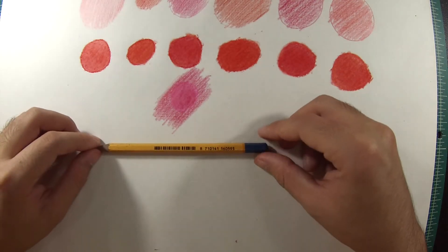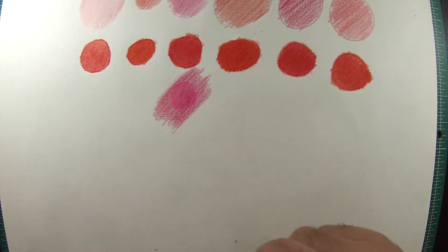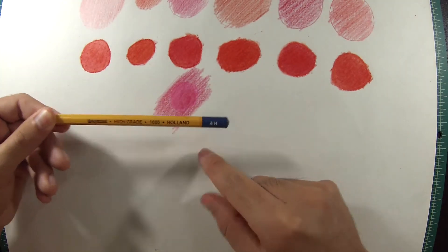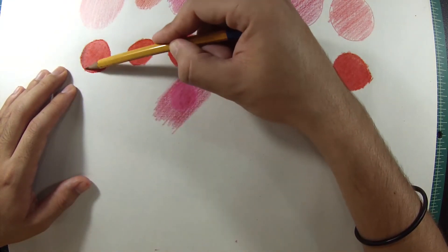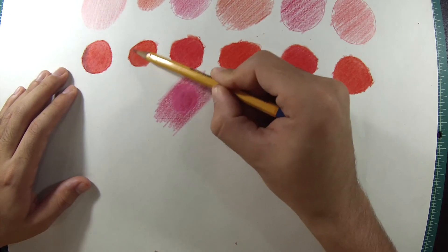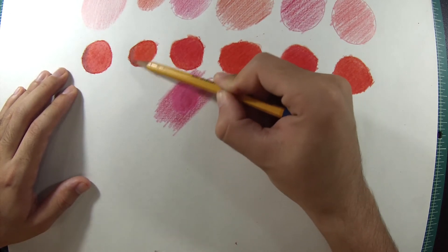So another thing that I wanna talk about is that you can use your simple, just a simple pencil. I'm using my 4H pencil to shade if you wanna have a darker red.